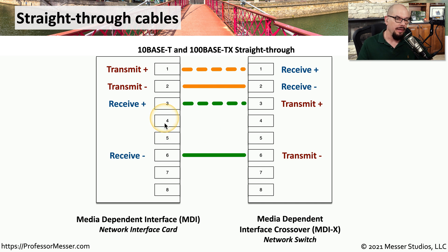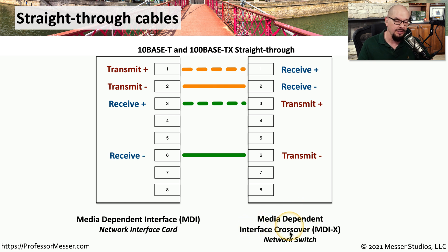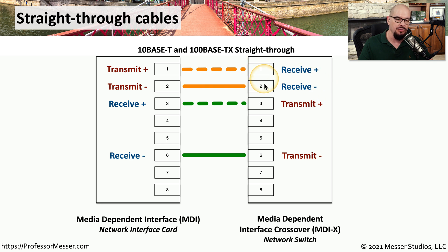With 10 and 100 megabit ethernet, we don't use pins 4, 5, 7, and 8. On the right side is a network switch, which is a media dependent interface crossover, or MDIX — sometimes referred to as MDICS. This has receive plus and receive minus on pins 1 and 2, and transmit plus and transmit minus on pins 3 and 6.